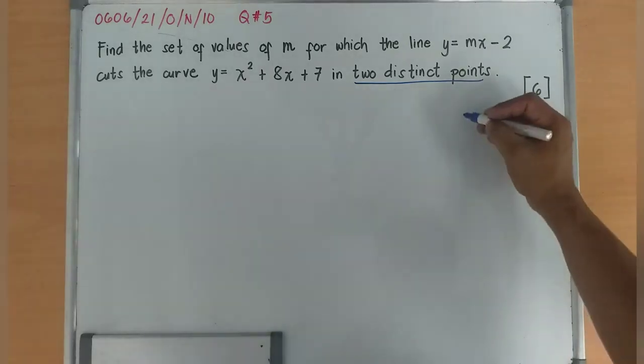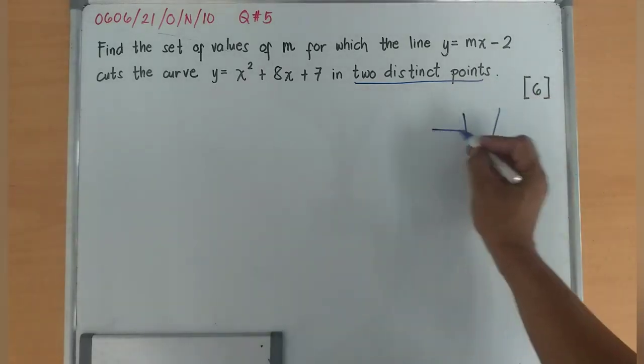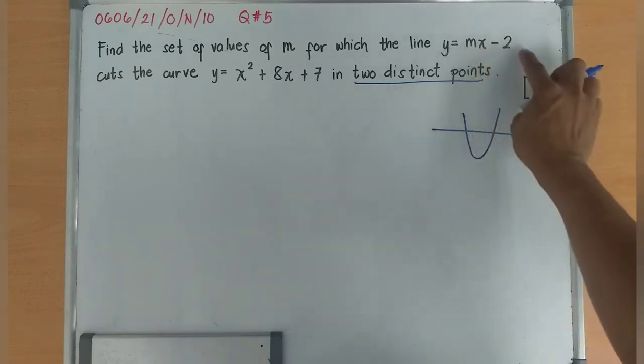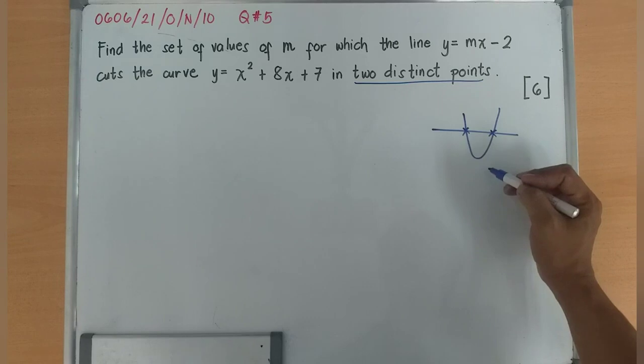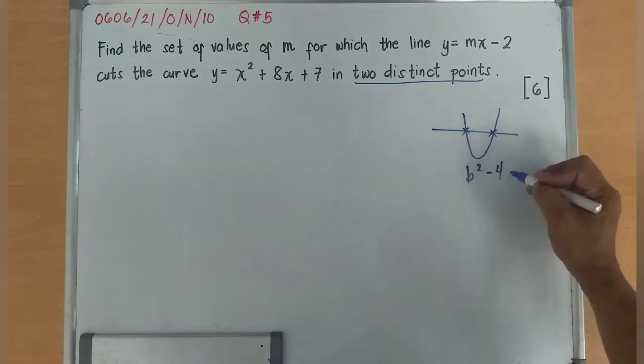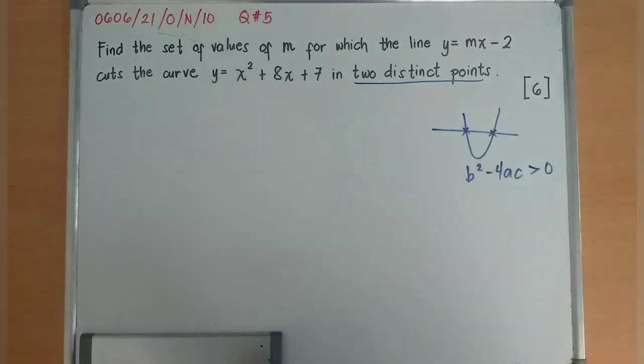So it means the line y = mx - 2 cuts the curve into two distinct points. Therefore, I'll be using b² - 4ac is greater than 0.